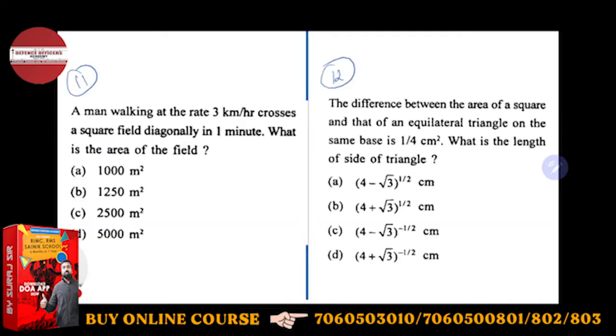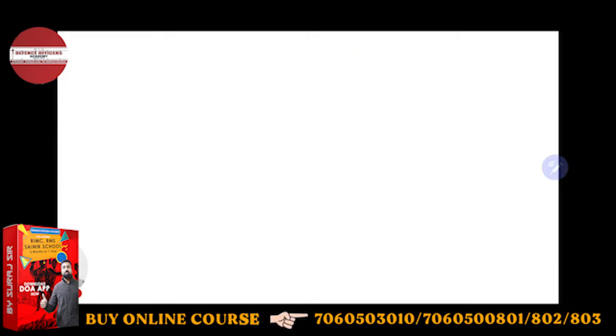So question number 11. The question is: a man walking at the rate of 3 km per hour crosses a square field diagonally. Question number 13 we are doing, so in question number 13 there is a square field.